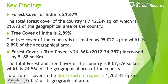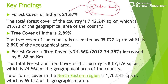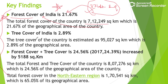Now for the key findings of the report. India's total land area is approximately 33 lakh square kilometers (32,87,469 sq km). Of this, 21.67% is forest cover, which means 7,12,249 square kilometers is under forest cover. For tree cover, India has 95,027 square kilometers, which is 2.89% of the geographical area.